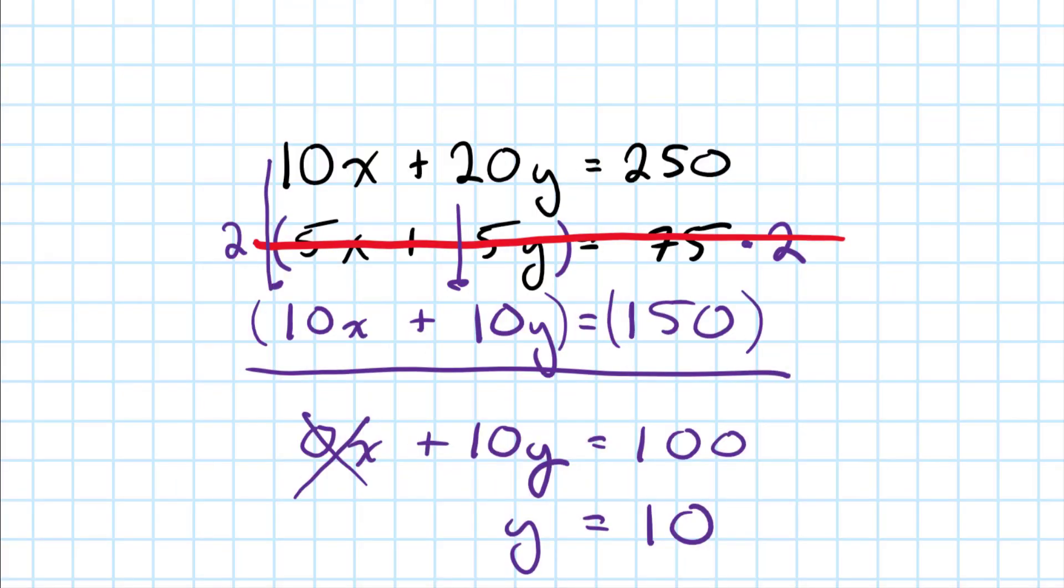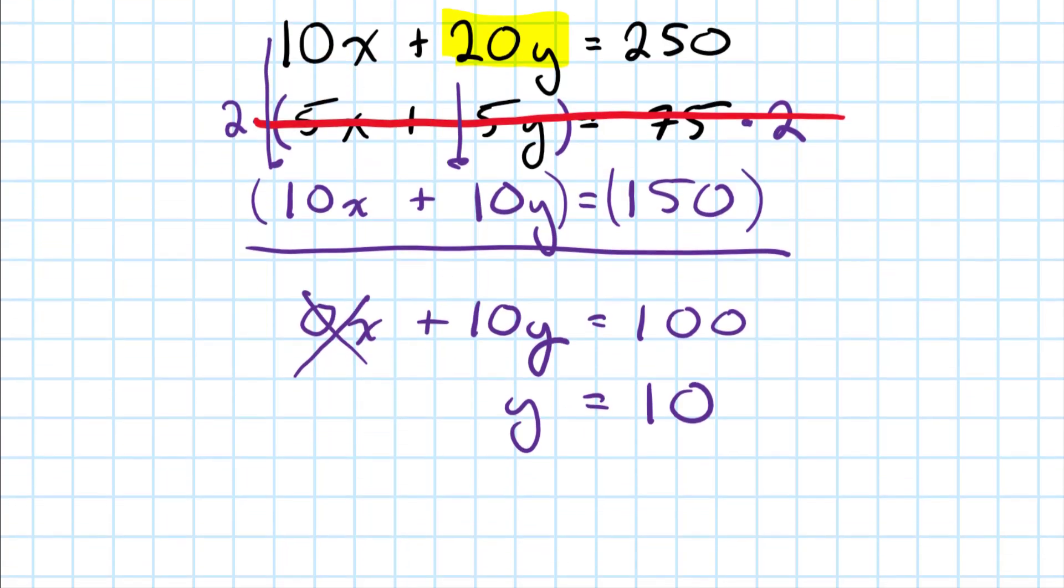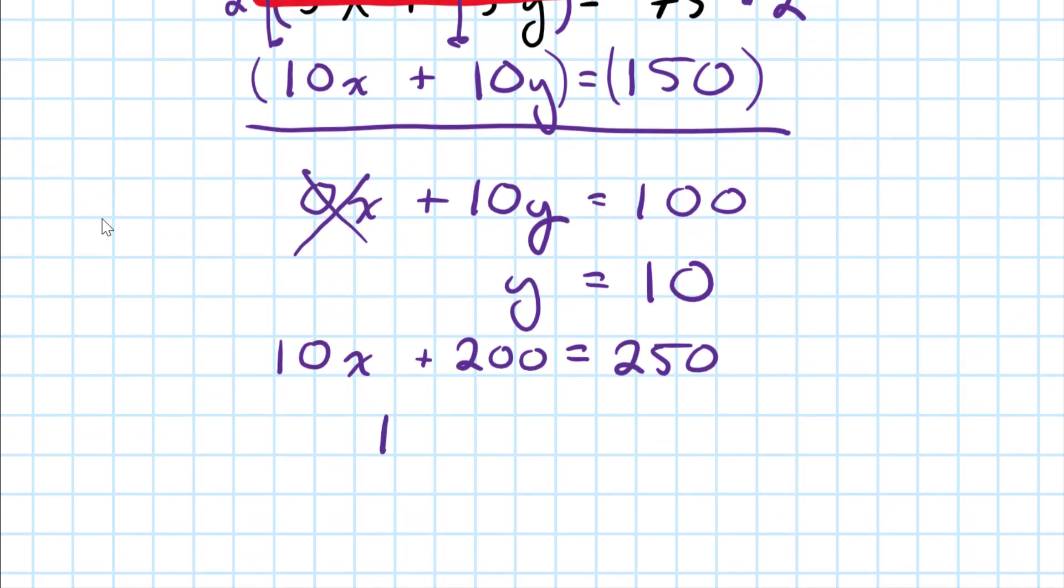Now that I have the value of Y, I can eliminate this unknown. And I can restate that equation as 10X plus 200 is equal to 250. And now we can simplify that. 10X is equal to 50. And if we divide both sides by 10, then X is equal to 5.